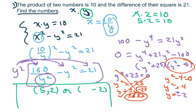And if it's negative 2, it's going to be negative 5. So my x and y can either be, my two numbers are 5 and 2, or my numbers are negative 5 and negative 2.